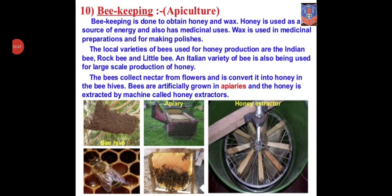Now comes the last topic of our chapter, that is beekeeping. Beekeeping is also called apiculture. Beekeeping is done to obtain honey and wax. Honey is used as a best source of energy and also has medicinal uses. Wax is used in medicine preparation as well as for making polishes.